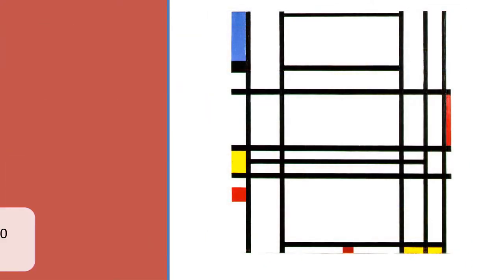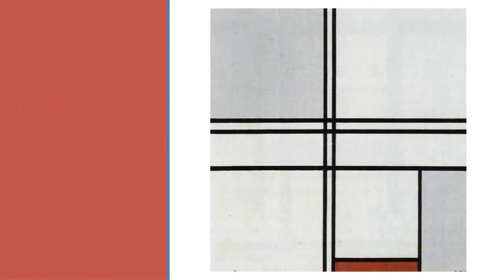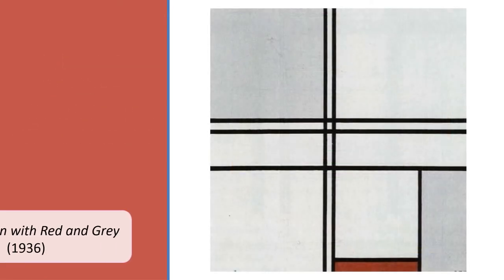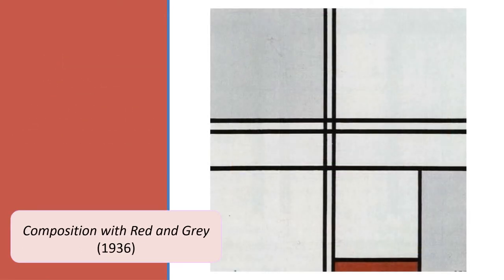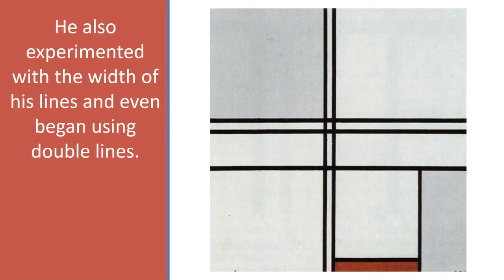In his later paintings, Mondrian began using less colour, focusing more on the shapes the lines created. He also experimented with the width of his lines and began using double lines.